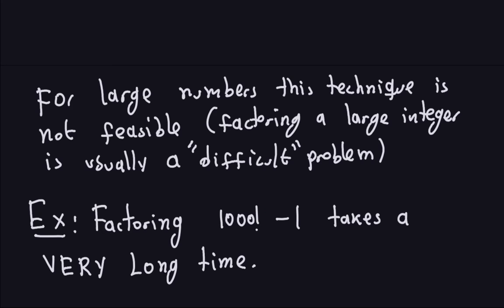I'm going to get a big number — 1 times 2 times 3 times 4 all the way to 1,000, then subtract 1. This is going to take a very long time to factor, even for a computer. I'm going to show you a software specialized in number theory called GP PARI (P-A-R-I). It has optimized and powerful algorithms to factor integers, and even though that software is optimized, it will take a very long time to factor this integer because factoring is a hard problem for large numbers.